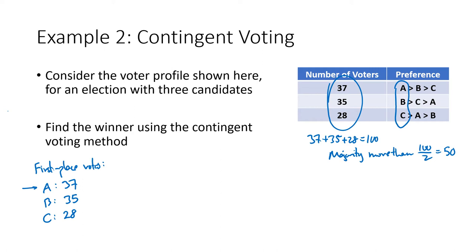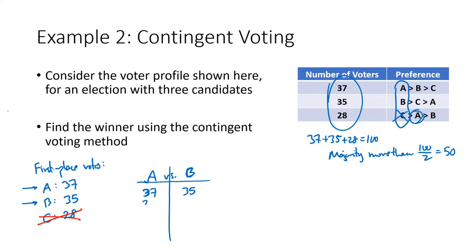In the A versus B matchup: the 37 voters who liked A best vote A; the 35 who liked B best vote B; and the 28 voters who had C first now vote for A since C is eliminated. A gets 65 votes, B gets 35 — so A is the contingent voting winner.